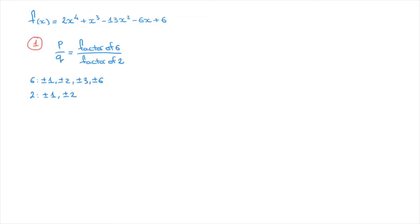When doing so, we only consider the positive factors of 2 — that is, 1 and 2 — since we'll be considering the plus or minus possibilities for the factors of 6. If the factor of 2 is 1, we get: ±1/1, ±2/1, ±3/1, and ±6/1. In other words, the possible rational zeros so far are ±1, ±2, ±3, and ±6.